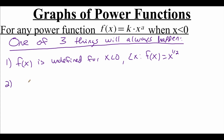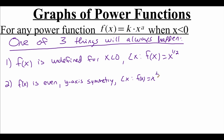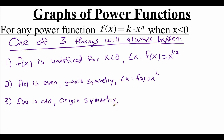The second thing that could happen is that our function could be an even function. Remember, being even means that our graph has y-axis symmetry. For example, if our function was f of x equals x squared, we know that gives us a parabola where the right side looks exactly the same as the left side — it's symmetric around the y-axis, so that's an even function. And then the last thing that could happen is that our function is an odd function. Remember, being odd means that our graph has origin symmetry. For example, f of x equals x cubed is odd because it's symmetric around the origin.